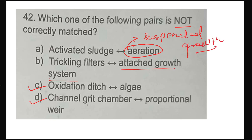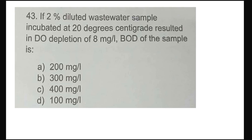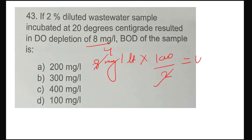Suspended growth — so option A will be the correct answer for Question 42. For Question 43, BOD test: 8 mg per litre depleted. Dilution factor is 2%, so 100 divided by 2 equals 50 — total BOD is 400 mg per litre. Option C will be correct for Question 43.